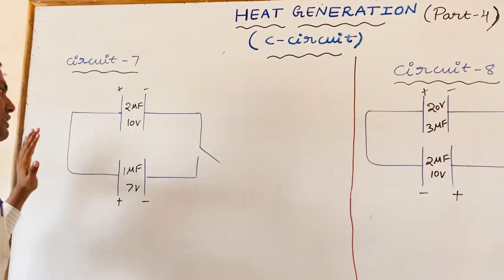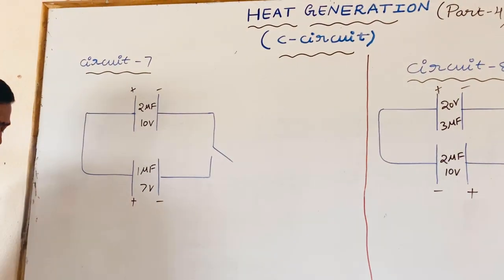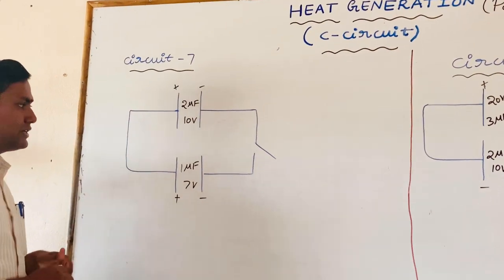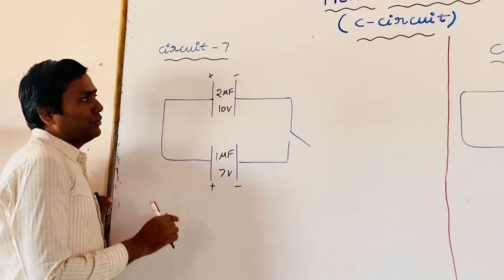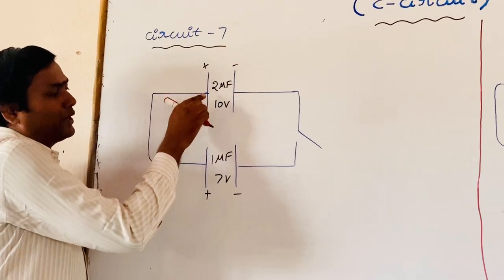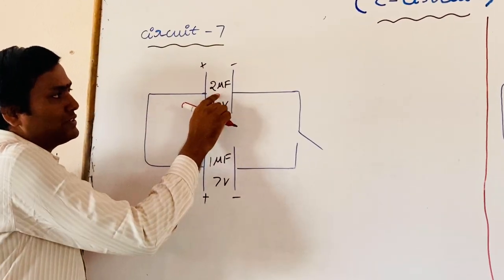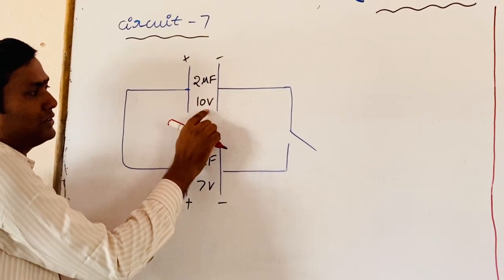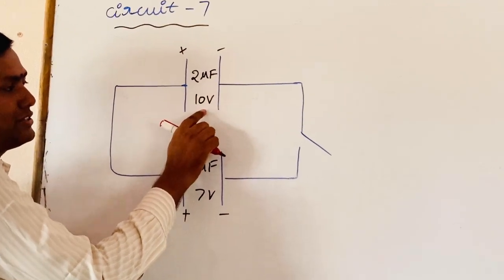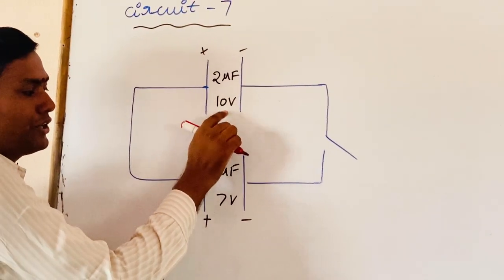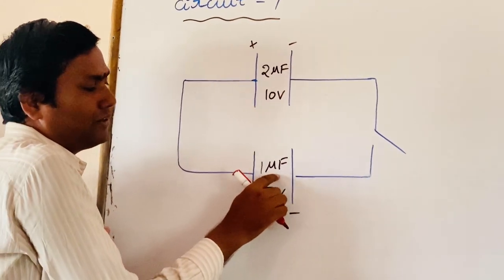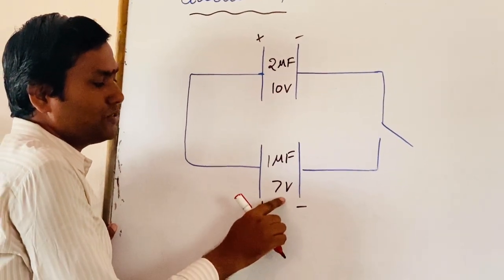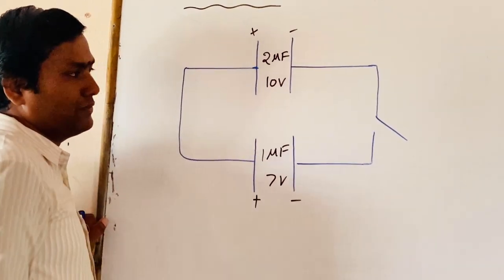Here you are seeing my circuit. In this circuit, there is no battery — only we have two capacitors. One has capacitance 2 microfarad, already charged to 10 volt. Another has capacitance 1 microfarad, charged to 7 volt.